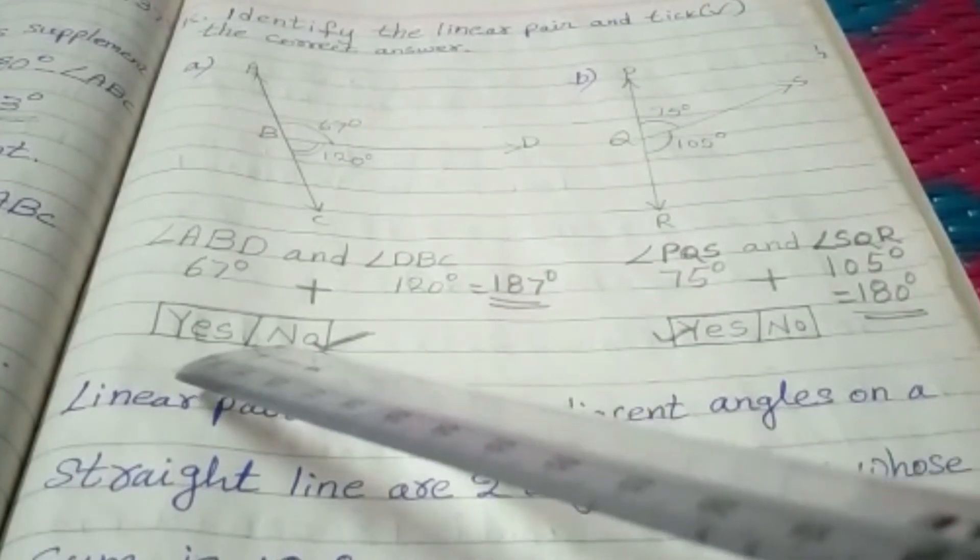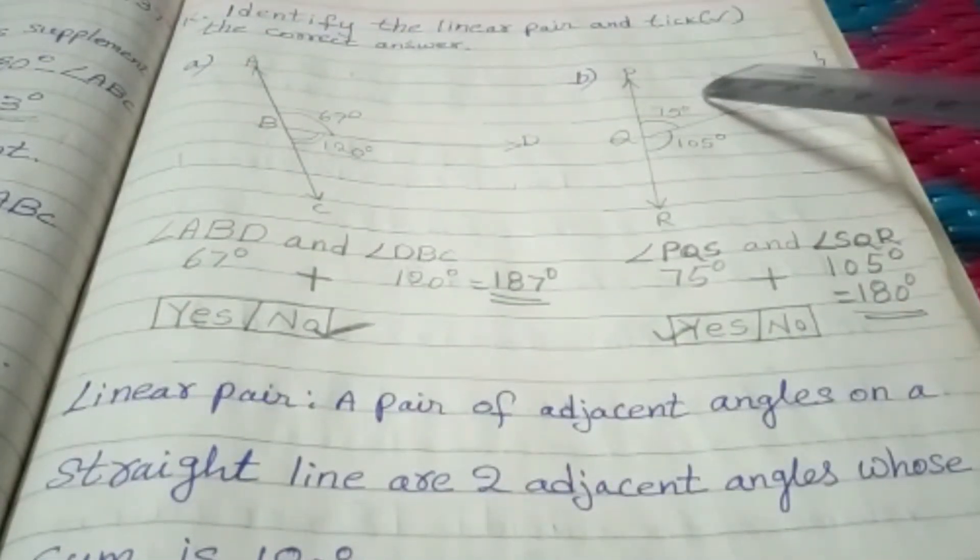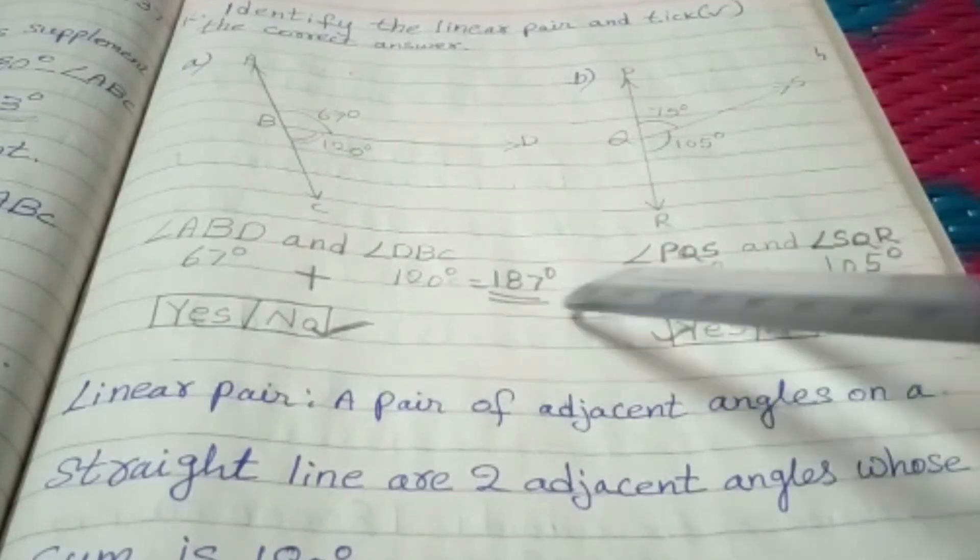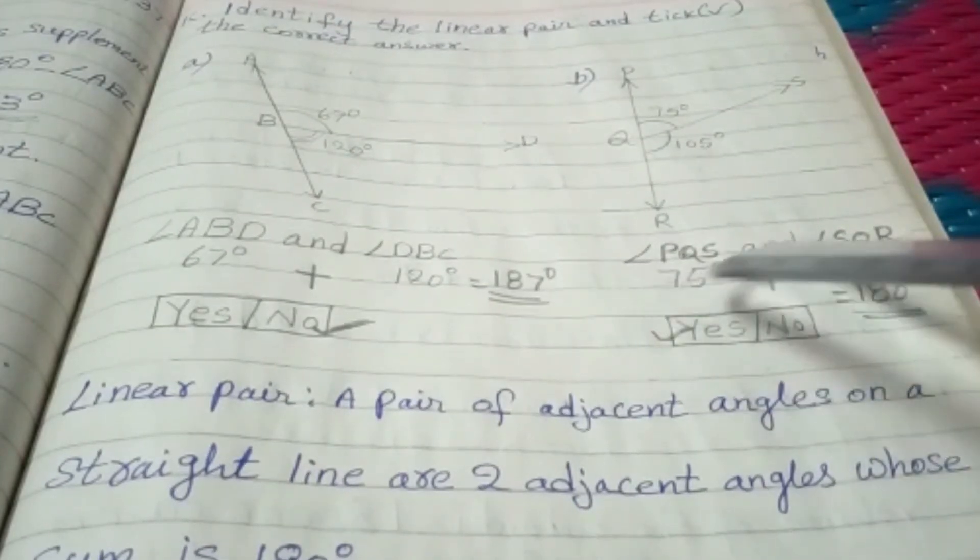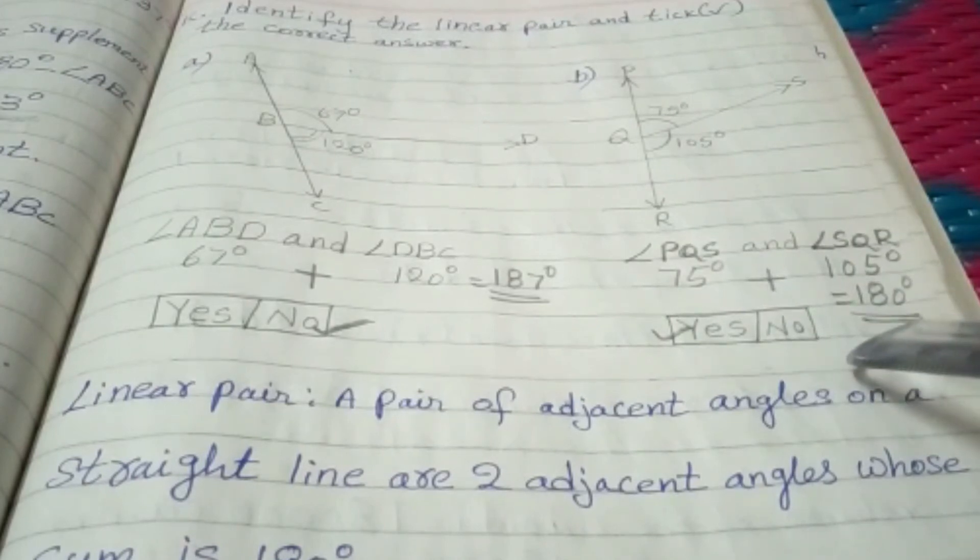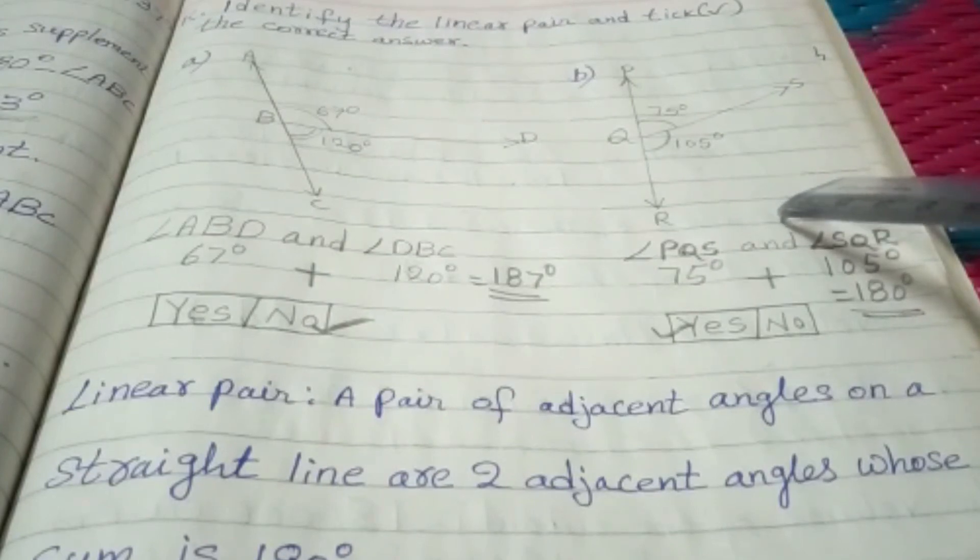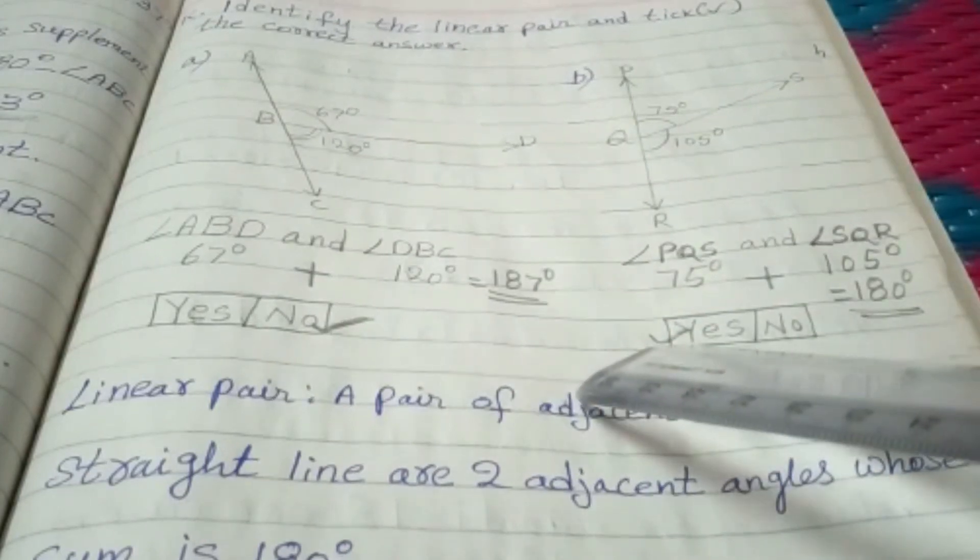The sum of angle PQR is equal to 180 degrees. So, this is a linear pair. Put the tick mark at yes.